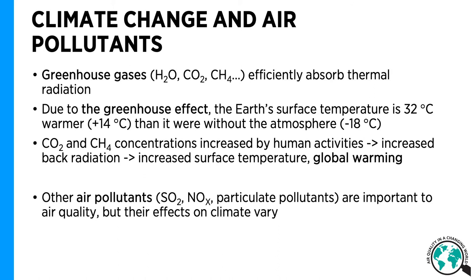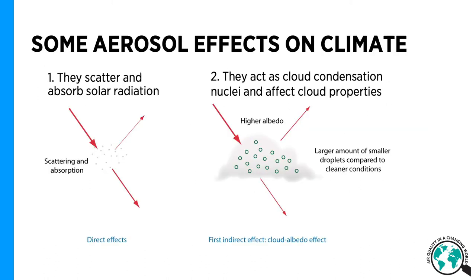How are climate change and air pollutants related? Greenhouse gases efficiently absorb thermal radiation and cause the greenhouse effect. Increased concentrations of some of these greenhouse gases increase the back radiation from the atmosphere to the surface, increasing the surface temperature — causing so-called global warming. We also have other air pollutants like SO2, NOx, and particulate pollutants that are very important to air quality. Aerosol particles in the atmosphere affect radiative transfer.